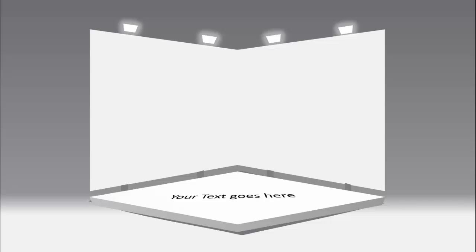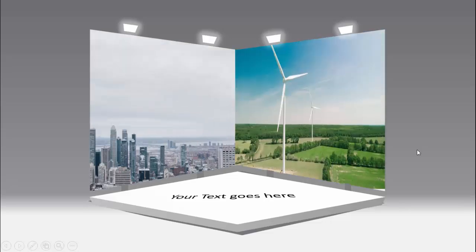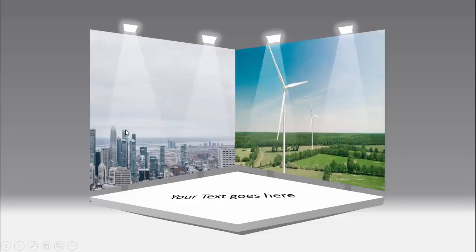In today's tutorial I am going to show you how to create an advertisement display slide in PowerPoint. I have created this advertisement display board where I have added one ramp and you can add your text here, and at the top I have added lights. There are two displays from the left and right side. When I click either the image or text, it will come here — you can see two different images and the lighting effect.